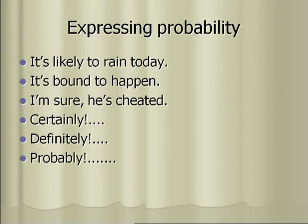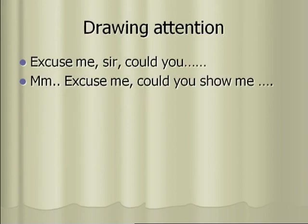To express probability: 'It is likely to rain today', 'It's bound to happen', 'I'm sure he is cheated', or use words like 'certainly', 'definitely', 'probably'. For example: 'Probably, this is going to happen', 'Definitely, it will happen', 'Certainly, he will come'. These words are frequently used to express probability in different situations.